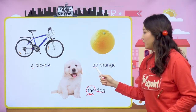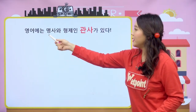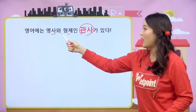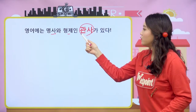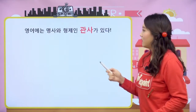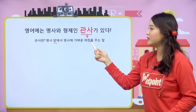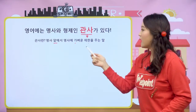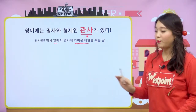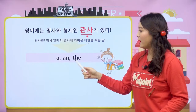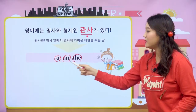오늘 관사는 다름이 아니라 이 세 아이 a, an, the를 우리는 관사라고 이야기를 해요. 어떨 때 a를 쓰고, 어떨 때 an을 쓰고, 어떨 때 the를 쓰는지 한번 자세히 살펴보도록 할게요. 영어에는 명사와 형제인 관사가 있다. 명사, 관사 이름도 비슷하죠. 둘은 뗄래야 뗄 수 없는 사이입니다.